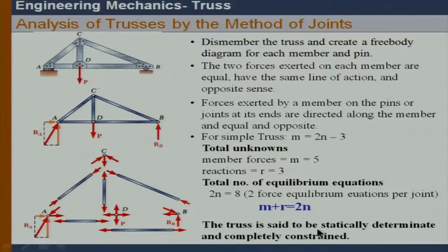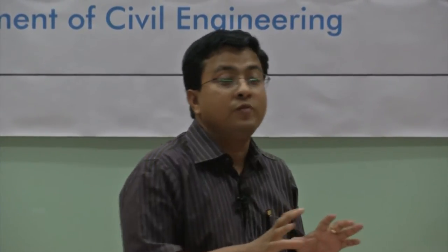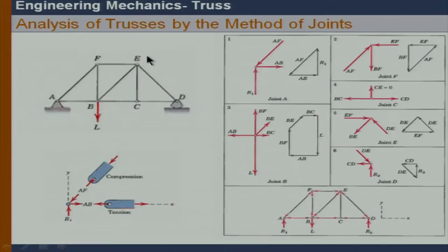The total number of unknowns, including member forces and reactions, equals the total number of equilibrium equations — therefore the truss is statically determinate and completely constrained. The simple truss is internally rigid, so no internal deformation is allowed. It is supported by three reactions which prevent any movement. Therefore it is externally rigid as well as internally rigid and completely constrained.